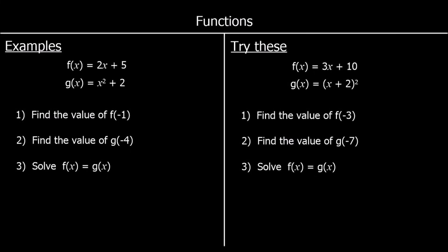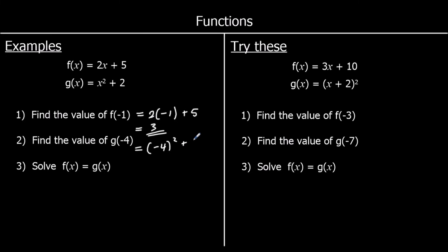Here are another set of examples. This time we've got f(x) and the f function is 2x plus 5, and g(x) is x squared plus 2. Question 1: we are changing x to negative 1 in the f function. So it's 2 times negative 1 plus 5, which is negative 2 plus 5, which is 3. For the second one, we're changing x to negative 4 in the g function. So that would be negative 4 squared plus 2. 16 plus 2 is 18.